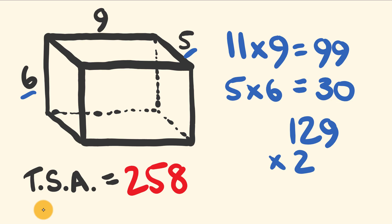So there you go. That's the trick for working out the total surface area of any rectangular prism almost instantly.